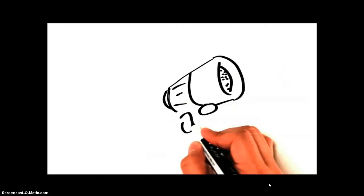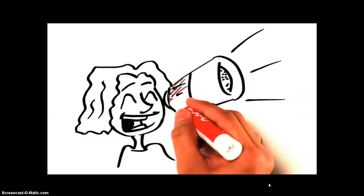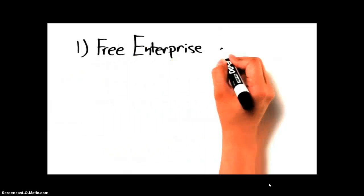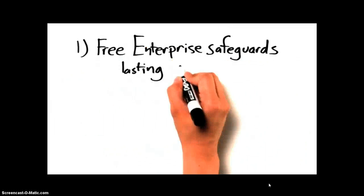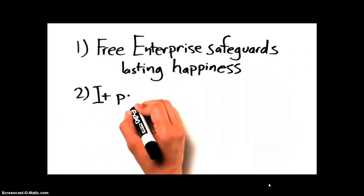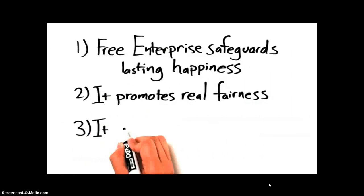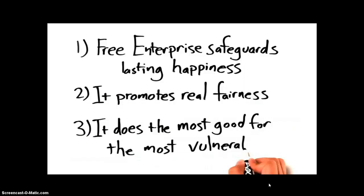What we need is our own moral argument. If we want to start winning, we need to start making the moral case for free enterprise. And it's actually pretty easy to do. The moral case has three key points. First, free enterprise safeguards lasting happiness. Second, it promotes real fairness. And third, it does the most good for the most vulnerable.